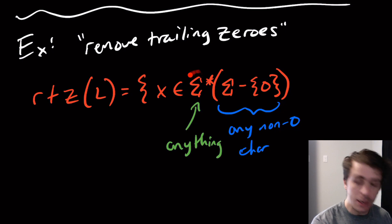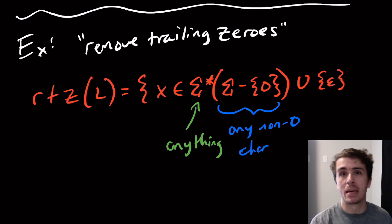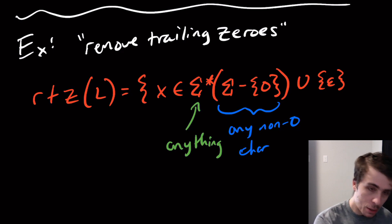Anything can appear at the beginning, it's just that a zero can't appear at the end. We're going to union this with the empty string because we can assume that the empty string has zeros removed on the end. Trailing here means at the end of the string, so the suffix that the string doesn't have a zero in it. But note that we haven't used the language L here.